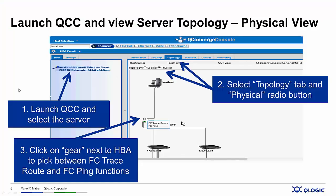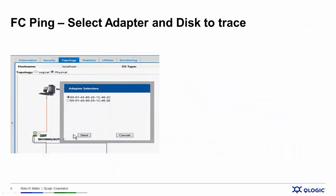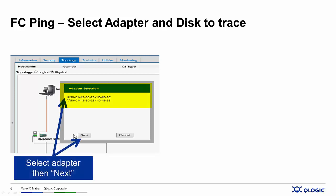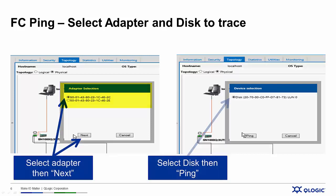Once we decide what we want to do, let's say we want to run FC-Ping. I click on FC-Ping and a box pops up providing adapter selection. This particular adapter is a dual-port adapter, so I can pick either of the ports. Then I click the Next button and a new window pops up where I pick the storage device I want to FC-Ping. In my SAN environment I only have one disk array connected, so I have one choice, and then we hit the Ping button.